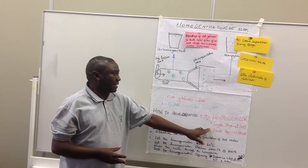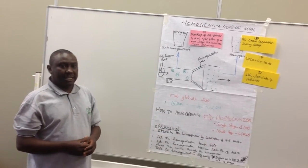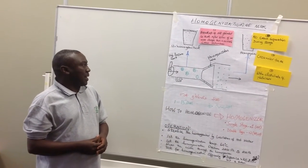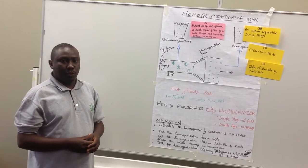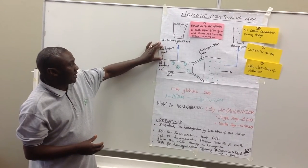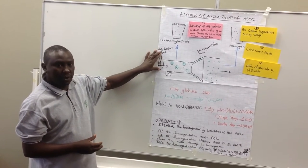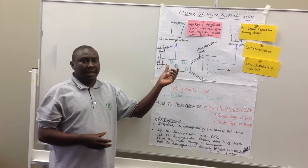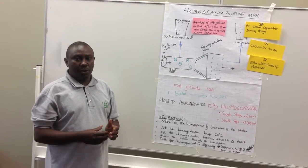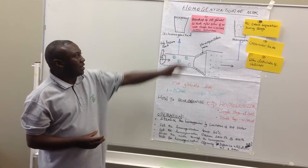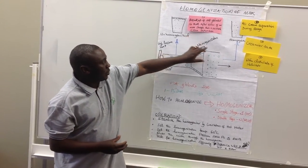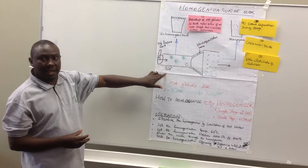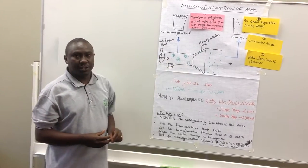The principle of homogenization is to pass milk through the equipment under high pressure. We use a high-pressure pump to pump the milk into the homogenizer, and then the milk is forced into a small orifice or space called the homogenization valve. What I represent here is a unit where homogenization takes place.